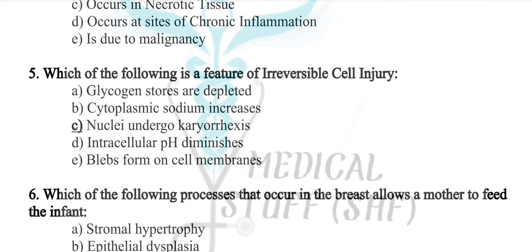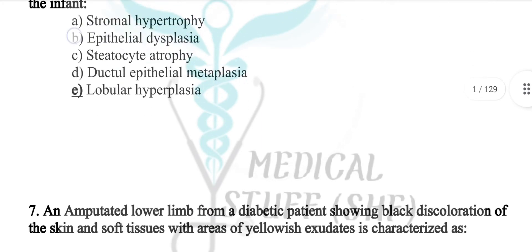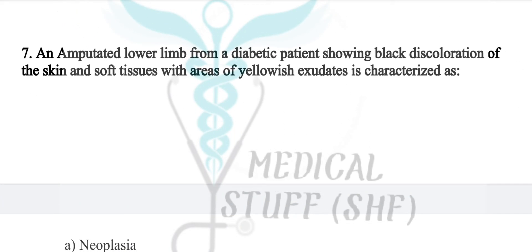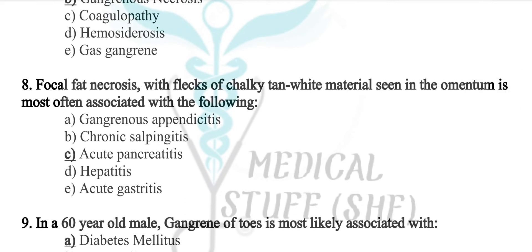Nuclei undergo karyolysis in irreversible cell injury. Which of the following process occurs in the breast that allows a mother to feed the infant? The answer is lobular hyperplasia. MCQs with areas of relish exudate is characterized as gangrenous necrosis.